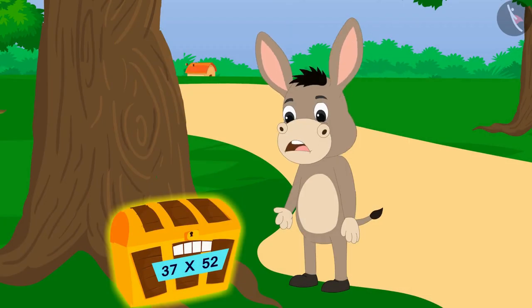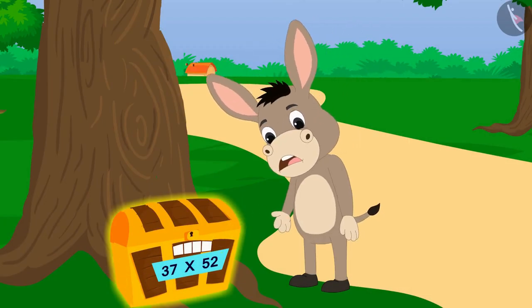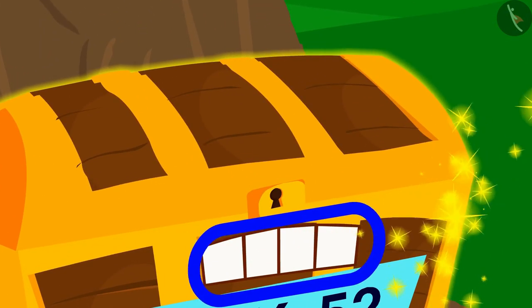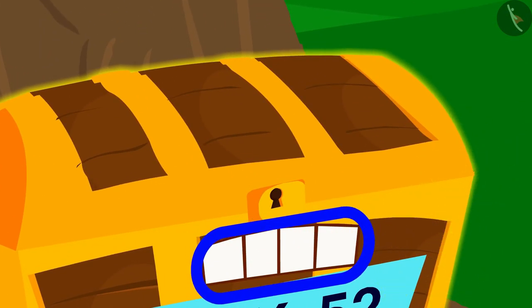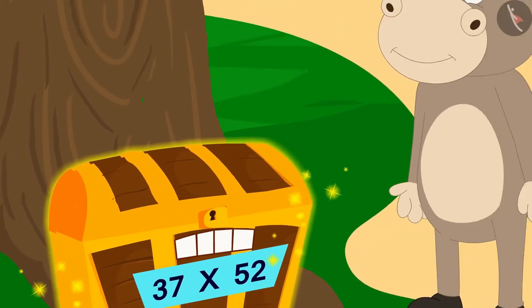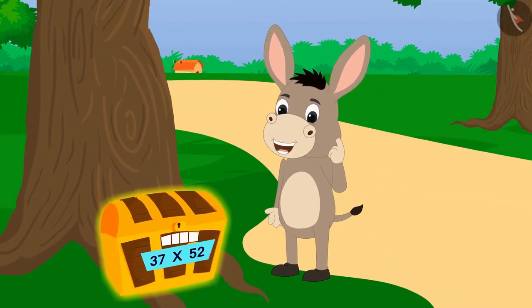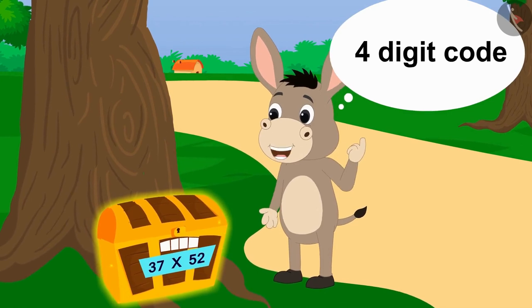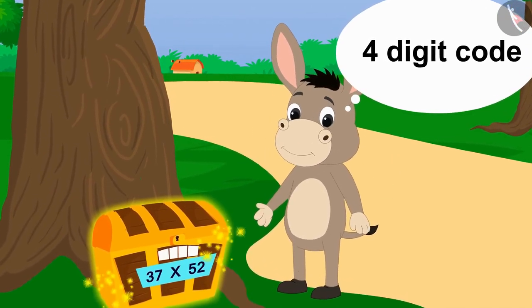Bhola noticed that the box was closed with a lock which could be opened with a four-digit code. Looks like I'll have to use a four-digit code to open this box, thought Bhola.